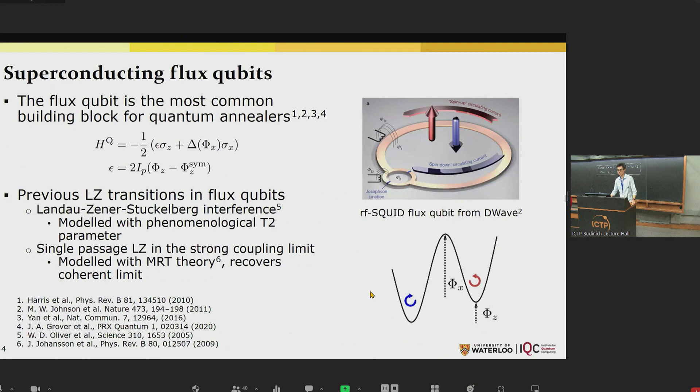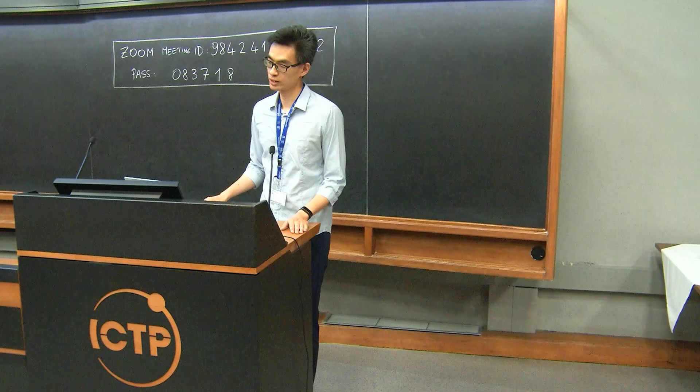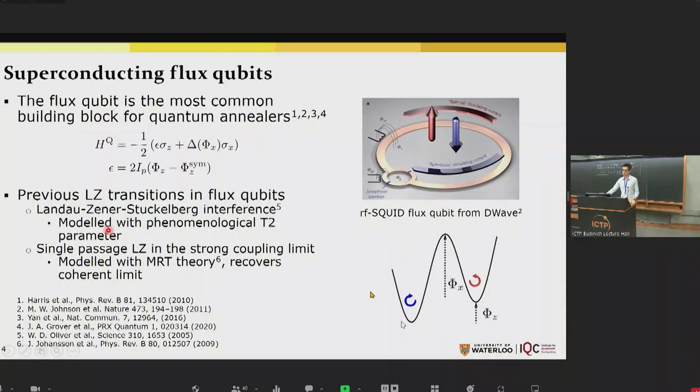We perform our measurements on a superconducting flux qubit, which is one of the most common building blocks for quantum annealers. It has a qubit Hamiltonian with epsilon sigma-z and delta sigma-x. These two coefficients, epsilon and delta, are controlled by two external flux biases on the qubit, which we call phi-z and phi-x. If you look at the two-well picture that represents the potential energy of the flux qubit, phi-z controls the tilt between the two wells, so that controls epsilon. And phi-x controls the tunneling barrier between the two states, so that controls the delta term.